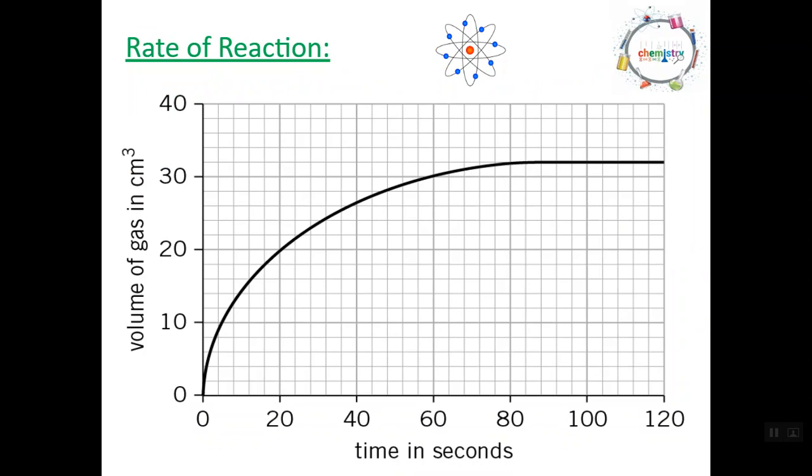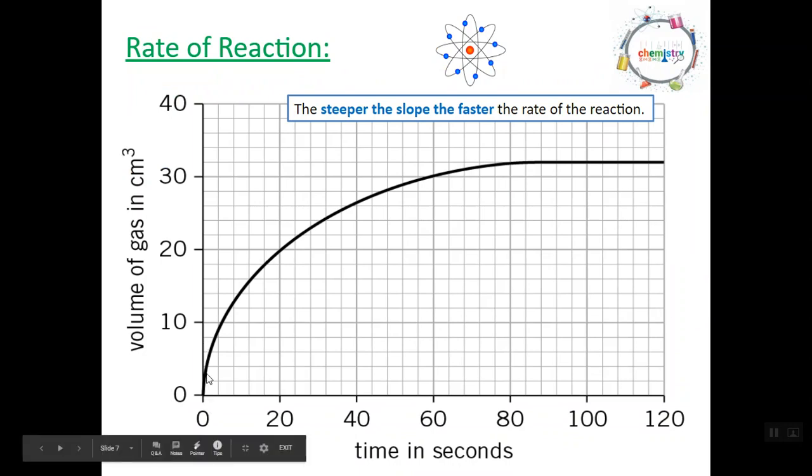What I've asked you to do is describe your graph. So we're going to start off really simply. The steeper the slope, the faster the rate of reaction. And this means that the rate of reaction is happening really fast here, because the slope is much steeper.